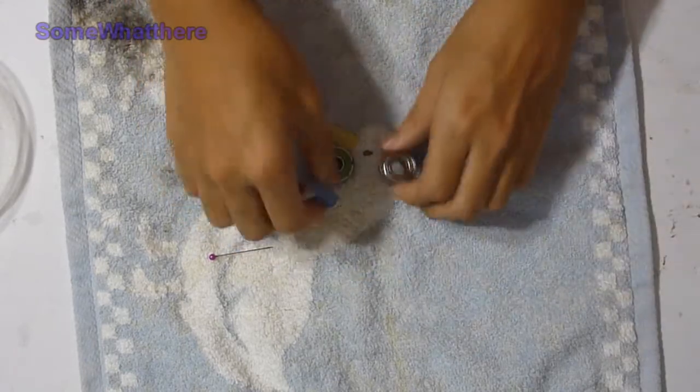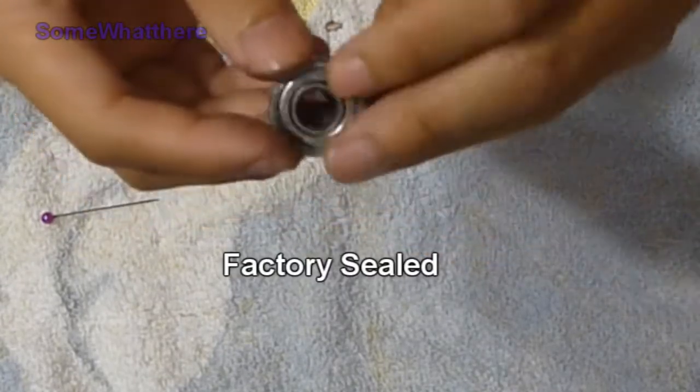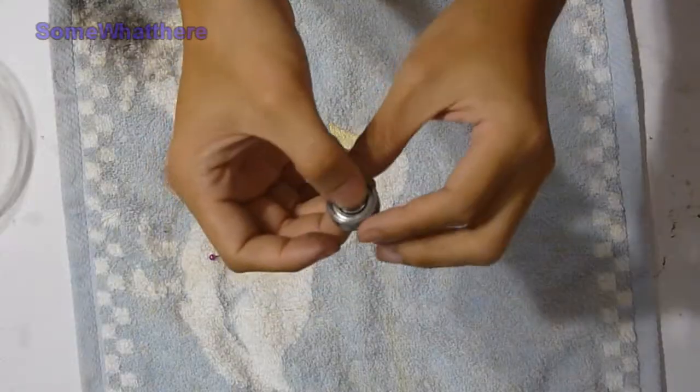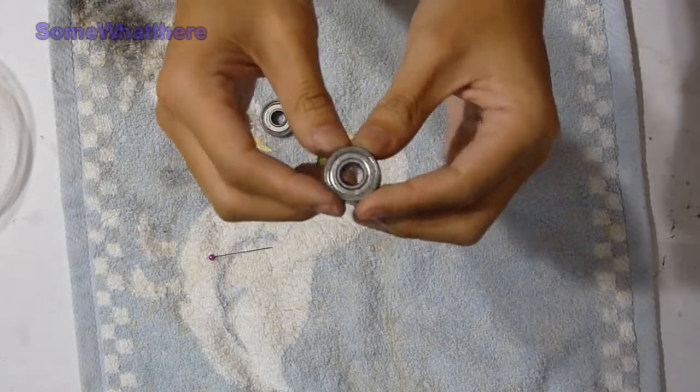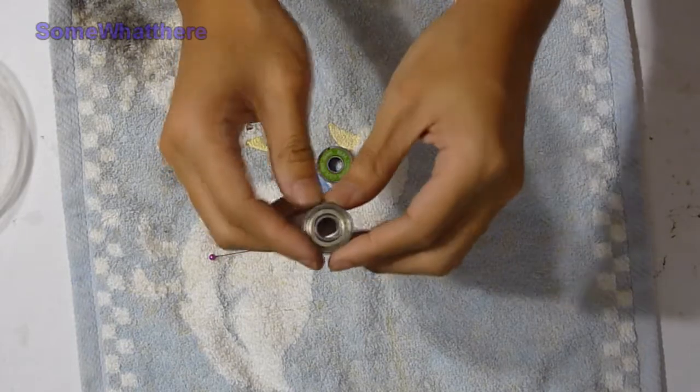The last one we have here is the factory seal bearing. For this type, there is no way to service it. If you need to service it, it means it's time to change it. Just throw it in the dustbin and buy a new one.